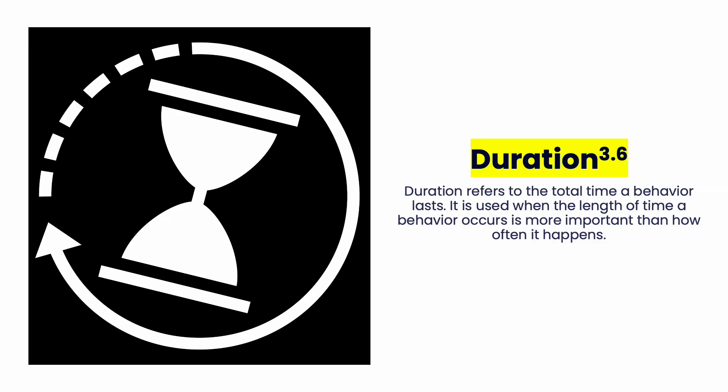But if you took duration, that tantrum lasted a whole hour at school — about once per week, she has approximately an hour-long tantrum. That's very important: she lost an hour of learning time and was in a state of distress for an hour. That changes things compared to a five-minute tantrum once a week. Similarly, for social engagement, if frequency says five times a week but duration shows that play only lasts one to two minutes, you now know something important — it might change what you do with that behavior.